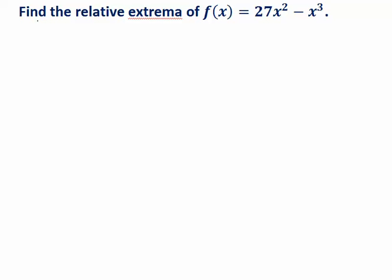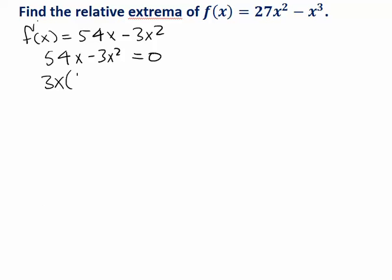So let's start by creating a first derivative sign chart. Let's take the derivative of the function, which in this case will be 54x minus 3x squared, and let's look for the critical points by setting that derivative equal to 0. We can solve this equation by using the quadratic formula or by factoring out 3x. I think factoring is easier. In this case, we're going to see that the solutions are x equals 0 and x equals 18. So those are our critical values.